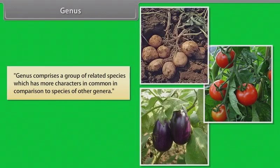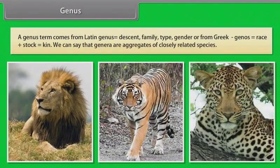Genus comprises a group of related species which has more characters in common in comparison to species of other genera. The term genus comes from Latin genus meaning descent, family, type, gender, or from Greek genos meaning race plus stock, which is kin. We can say that genera are aggregates of closely related species.